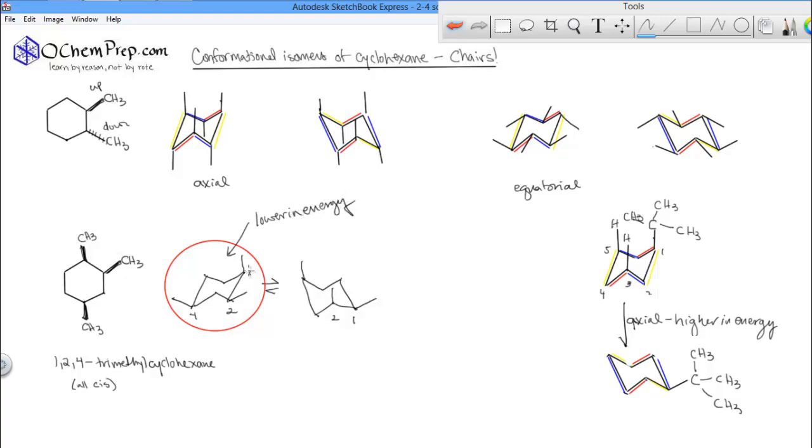Because it has two equatorial methyls and only one axial, where this ring-flipped one has two axial and one equatorial. Here we go. Thank you.